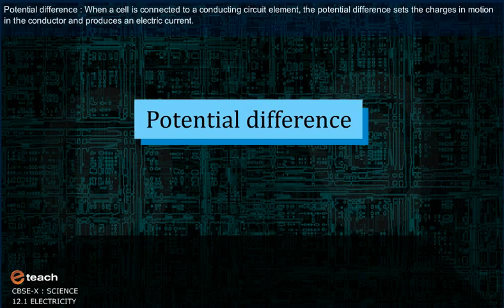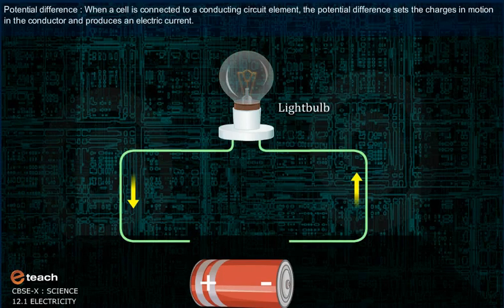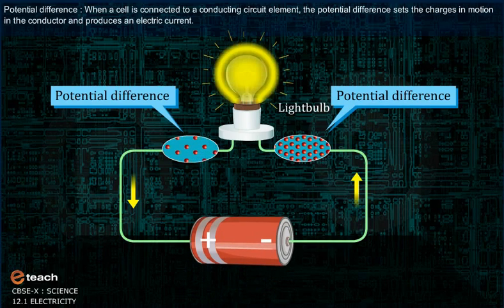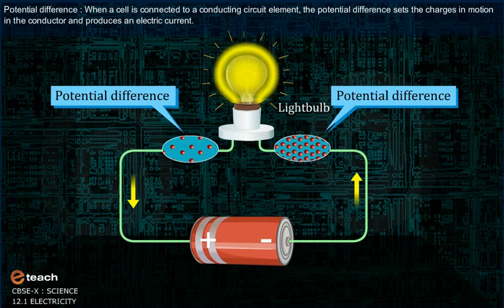Potential difference. When a cell is connected to a conducting circuit element, the potential difference sets the charges in motion in the conductor and produces an electric current.